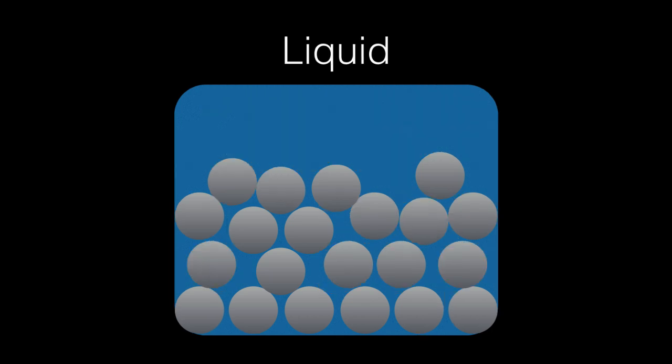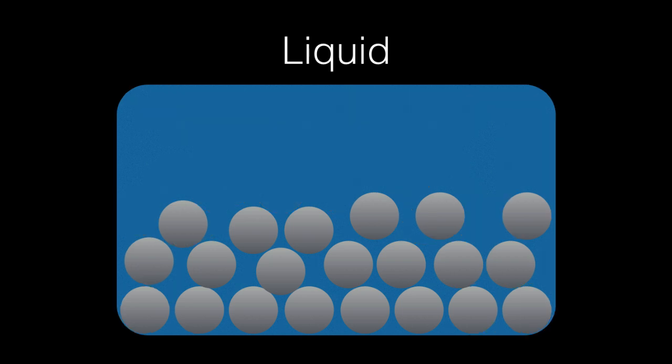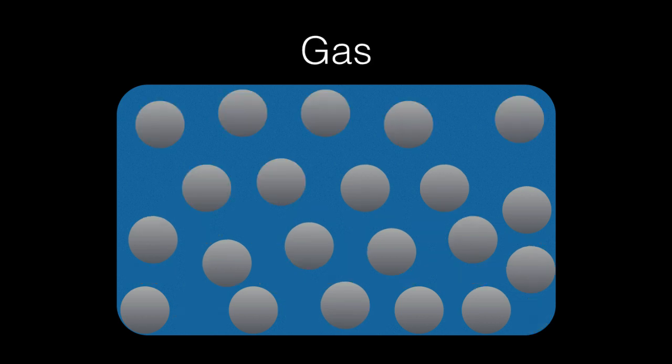Liquids have a definite volume, but don't have a definite shape. They're the shape of whatever container they're in. Gases don't have a definite volume or a definite shape. The particles are moving much more than in a liquid or in a solid, and they can move independently.